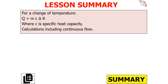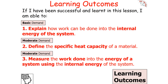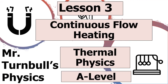To summarise today's lesson: for a change in temperature, Q = mcΔT, where c is the specific heat capacity, and calculations can include continuous flow heating. If we've been successful, you should be able to explain how work can be done into the internal energy of a system, define specific heat capacity, and measure the work done into a system's internal energy. Thank you very much for watching, and have a lovely day.